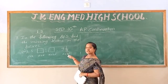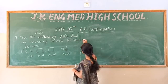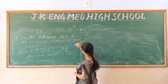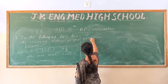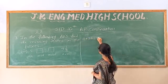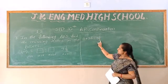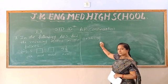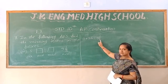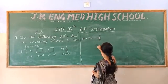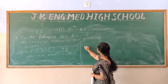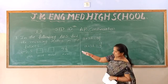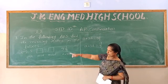The value 9 and a half is in mixed fraction form, so we convert it to an improper fraction. 9 and a half means 9 times 2 is 18, plus 1 is 19, so it becomes 19 divided by 2. Therefore a plus 3d equals 19 by 2. The a value is known as 5, so we substitute a equals 5.